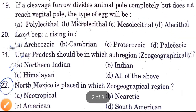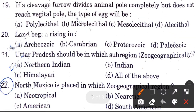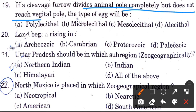Next question: If a cleavage furrow divides the animal pole completely but does not reach the vegetal pole, this type of egg will be — options are polylecithal, microlecithal, mesolecithal, and alecithal. This type of egg is called polylecithal.